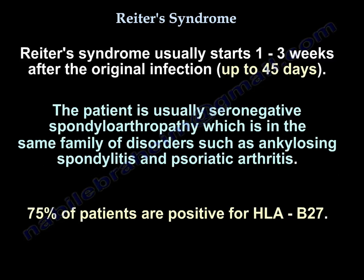Some people are more susceptible to Reiter's syndrome than others. Most cases resolve within weeks but may last longer; recurrence occurs in about 50% of patients. The patient is usually seronegative spondyloarthropathy, in the same family of disorders as ankylosing spondylitis and psoriasis. 75% of patients are positive for HLA-B27.